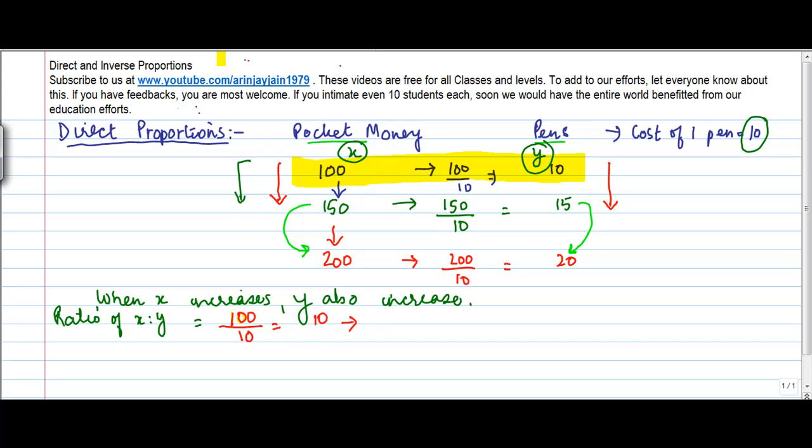In the second case, this is 150, this is 15. So, again, the ratio was 150 upon 15 is equal to 10. Even in the third case, similarly, if you see, this is 200, this is 20. So, the ratio again is 200 upon 20 is equal to 10.